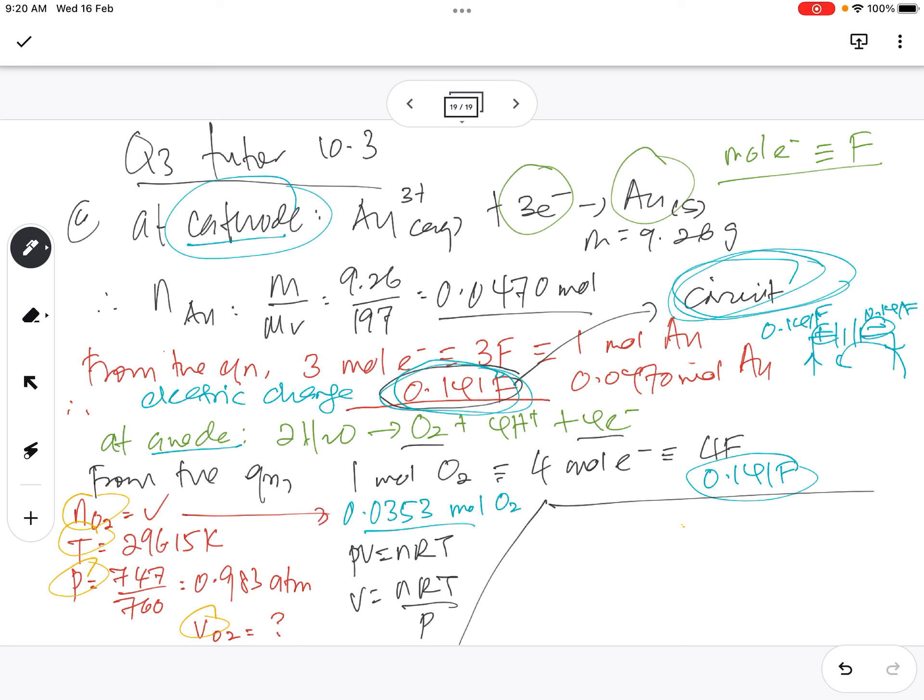So I calculate in this area. V equals N is 0.0353, R is 0.08206, T is 296.15, P is 0.983. 0.0353 times 0.08206 times 296.15 divided by 0.983, I get 0.873 cubic decimeter. Can you get it? Or 0.873 liters, liter is also the same. 0.873 liters also can.